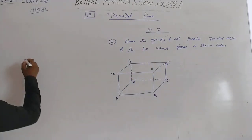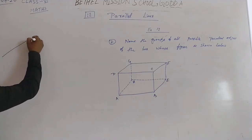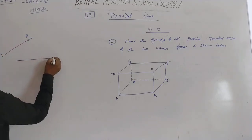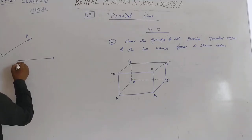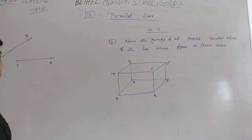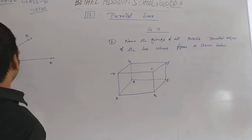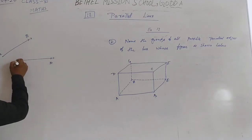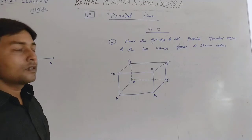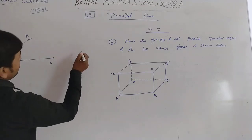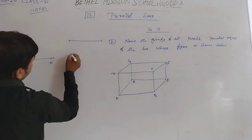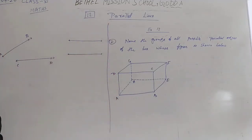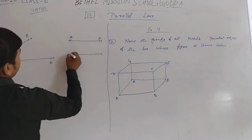Let's take two lines first. We give the name AB to one line, and we take another line and name it CD. So one line is AB and another is CD.